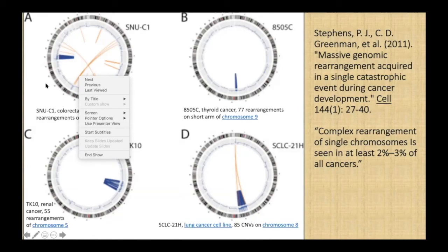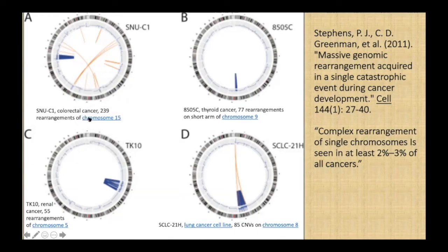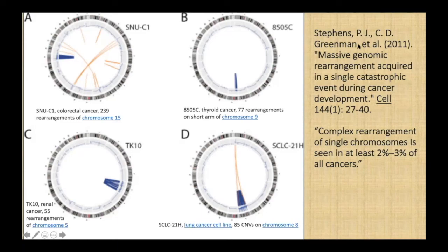For example, in this colorectal cancer image, 239 rearrangements of chromosome 15 — only chromosome 15 — are present in this region. In this thyroid cancer genome, there are 77 rearrangements on the short arm of chromosome 9. And in this lung cancer cell line, there are 85 copy number variations on chromosome 8. These rearrangements, in all four cancer genomes, indicate clustered exchanges on individual chromosomes. This characteristic pattern of individual chromosome fragmentation and reassembly is known as chromothripsis, which literally means chromosome shattering.